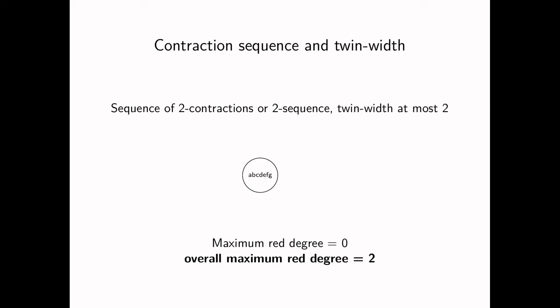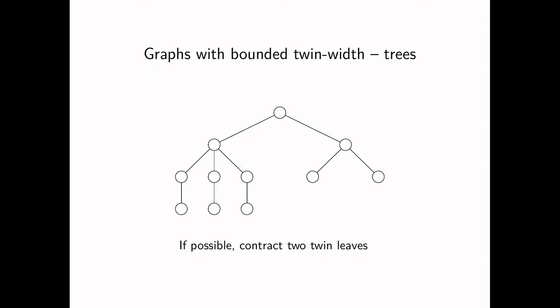Later in the talk, we'll see how to solve problems faster when we are given a d-contraction sequence where d is a constant. So let's see if we can get such a sequence, at least when the input graph is drawn from a simple class of graphs. And we'll start with arguably the simplest class, trees.